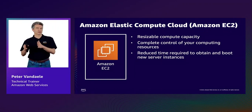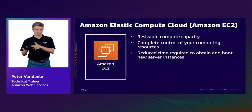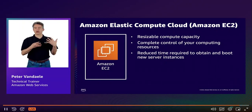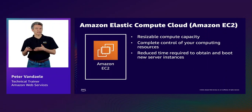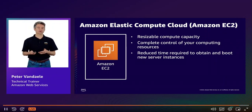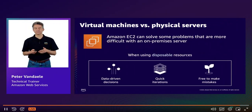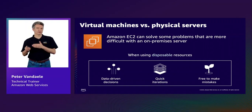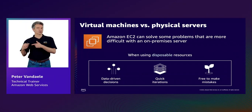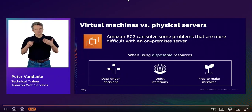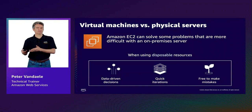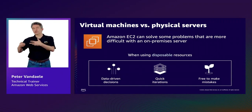Just like an on-premises server, our virtual machine will have a specific compute capacity expressed in virtual CPUs, a certain amount of memory, a network capacity and connected storage. They are called disposable resources because we can spin them up within minutes and dispose of them when no longer required.